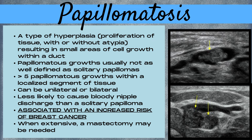Papillomatosis is a type of hyperplasia — a proliferation of breast tissue with or without atypia. It results in small areas of cell growth within a duct. Papillomatosis growths are usually not as well defined as a solitary papilloma, and this involves greater than 5 papillomatosis growths within a localized segment of tissue. It can be found unilaterally or bilaterally, and it's less likely to cause bloody nipple discharge than a solitary papilloma.